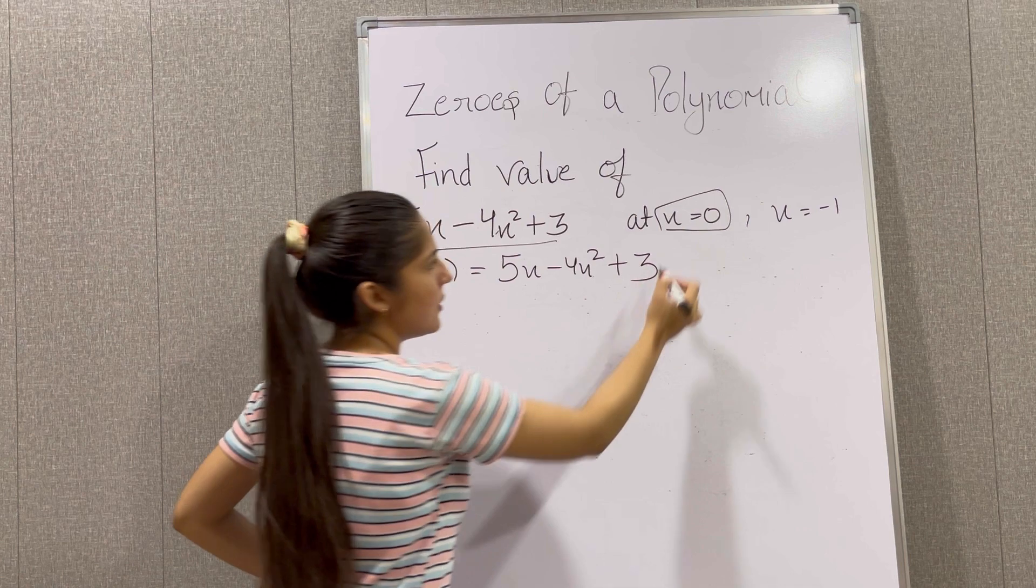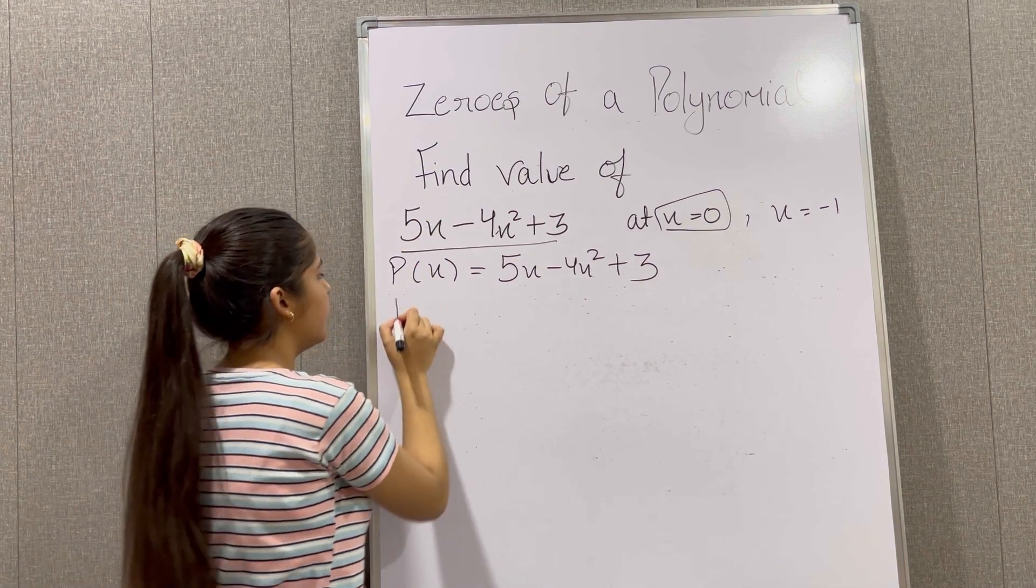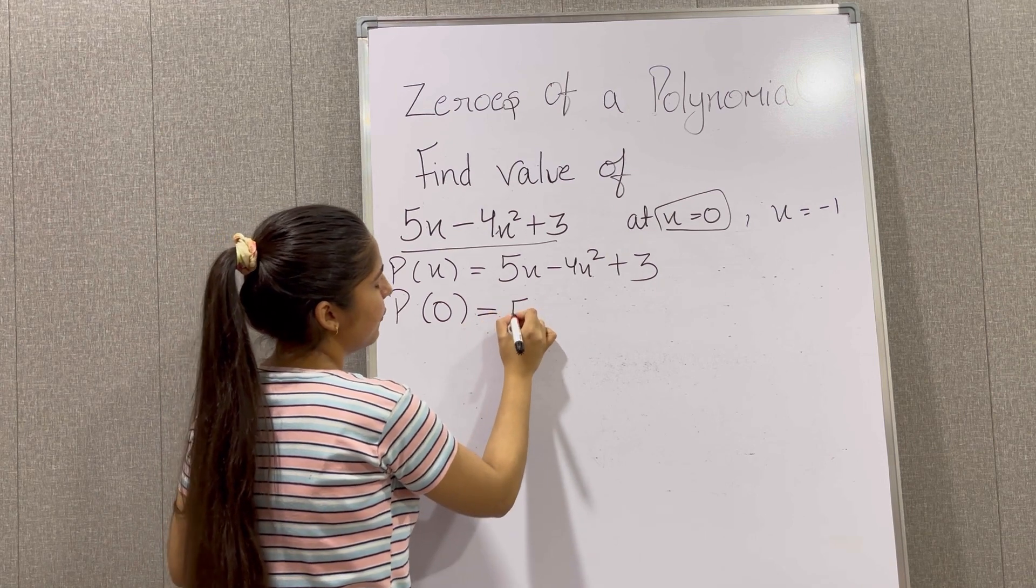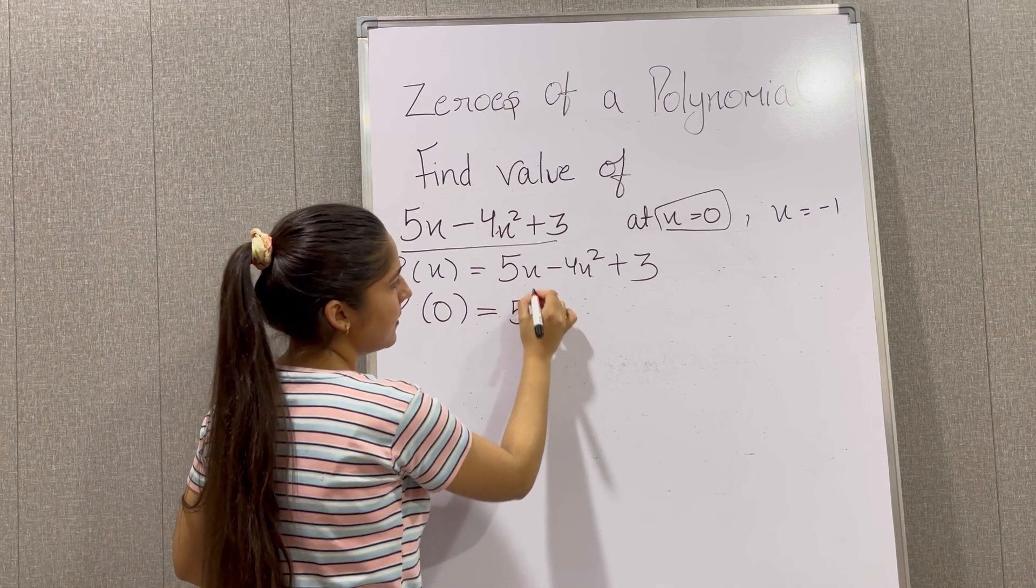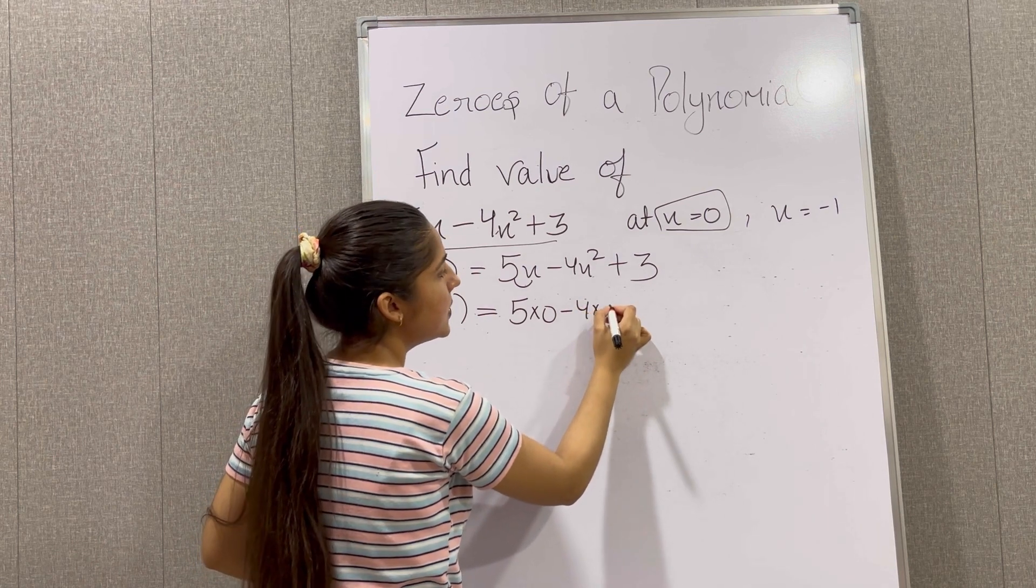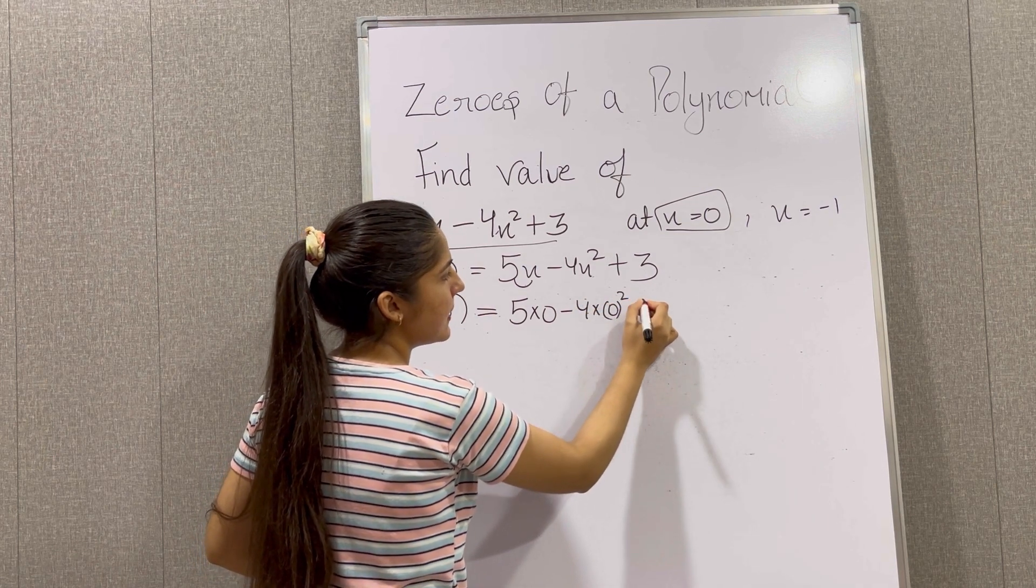Now we need to find the value at x equals 0. So in place of x we are going to put 0, equals 5 times 0 minus 4 times 0 whole squared plus 3.